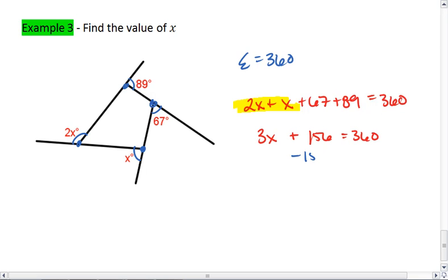We can subtract 156 from both sides. 3x equals 360 minus 156, which is 204. Divide by 3. And we get x equals 204 divided by 3, which is 68.